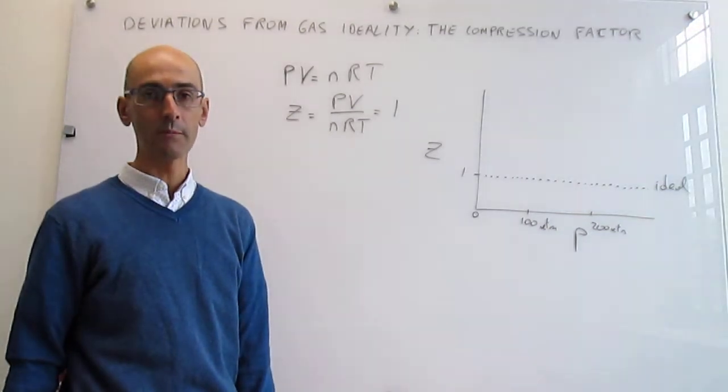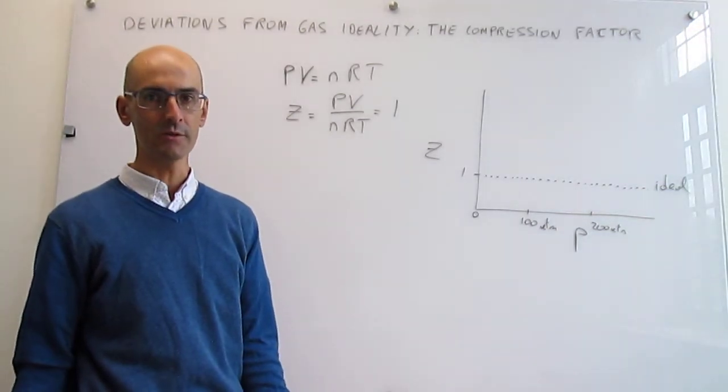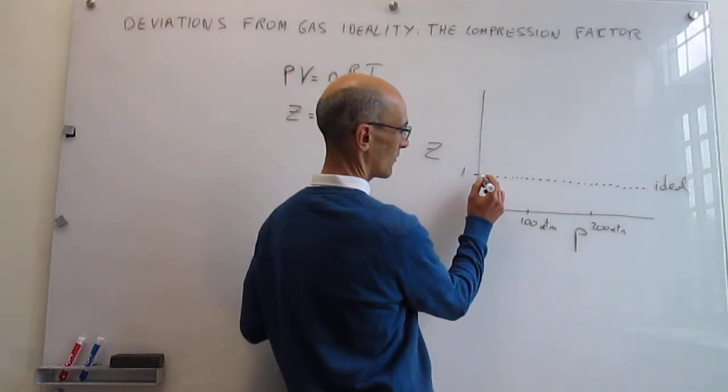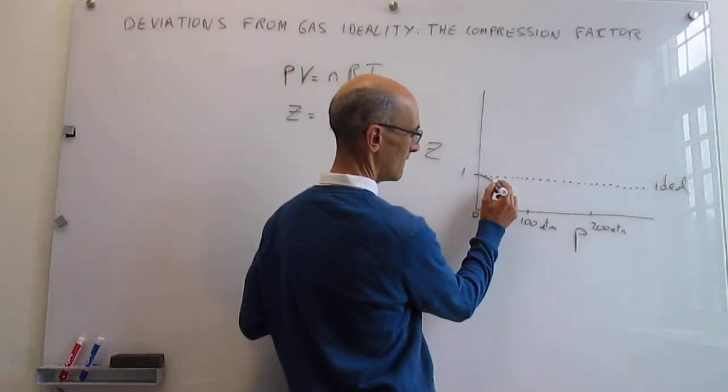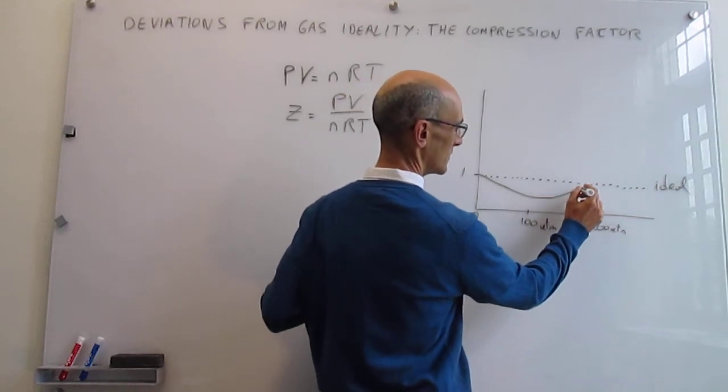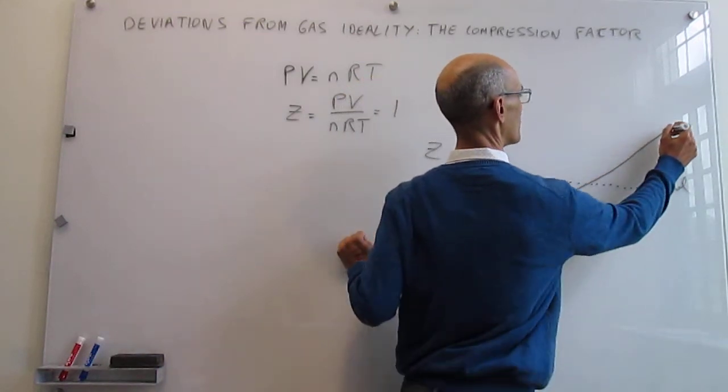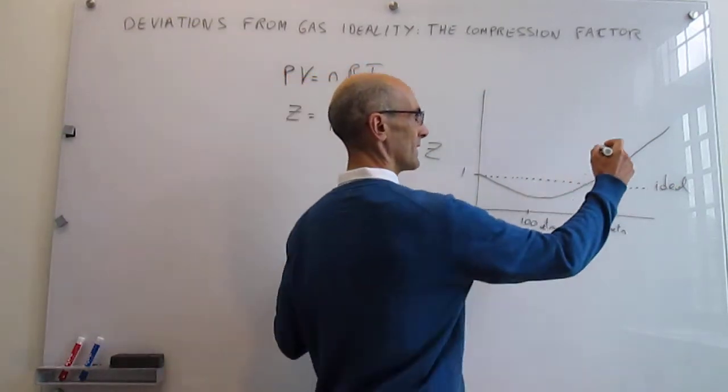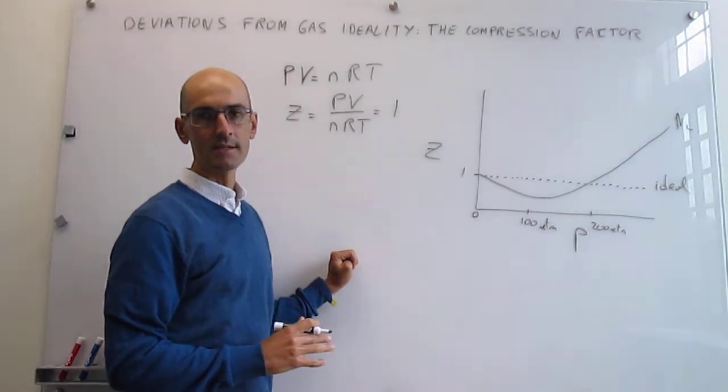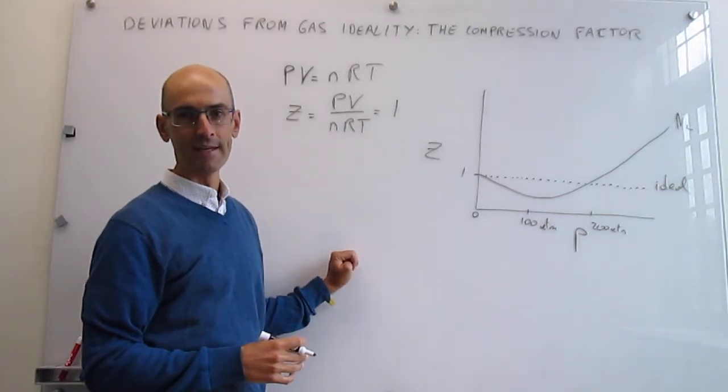I'm going to draw a couple of gases at room temperature. One is nitrogen, and for nitrogen the compression factor first drops, then it goes up and turns over. This is the line for nitrogen at constant room temperature, 298 Kelvin. For hydrogen you have a graph that looks like this.